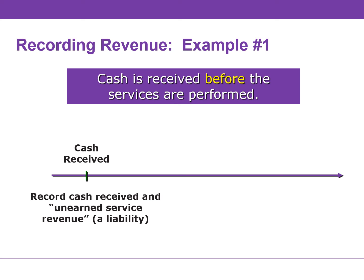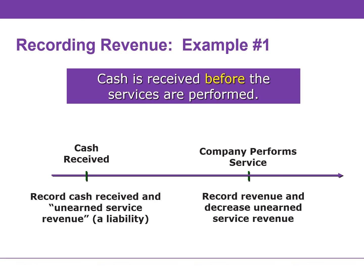We have an obligation to either provide the goods or services that were promised or repay the cash. So in this initial transaction, we are recording cash and a liability. When the services are provided or the product is delivered, revenue will be recorded and the liability — unearned revenue — is reduced. A great example of unearned service revenue is the airline industry. When you purchase a ticket from Southwest months in advance, they increase both cash and unearned service revenue, a liability. Southwest will recognize revenue and reduce the liability when they provide the service and take you to your destination.